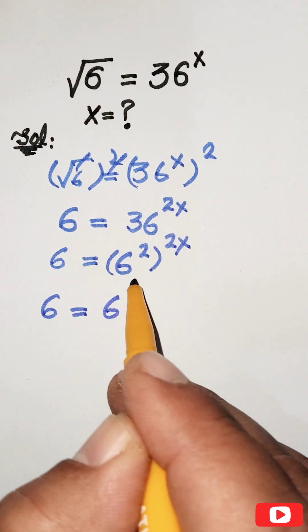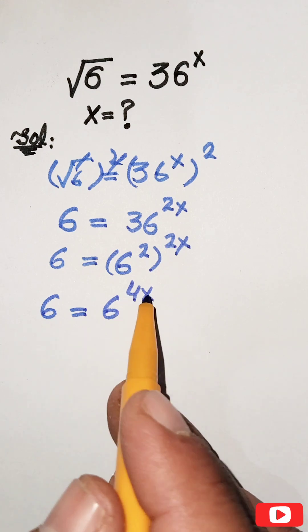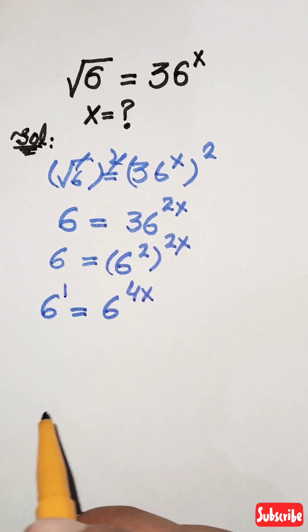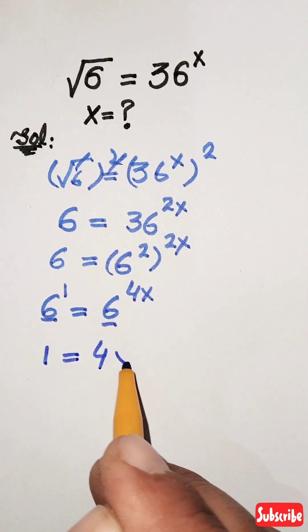Now we see that the bases are the same, so the powers will be equal. Here 6 to the power 1 equals 6 to the power 4x, hence bases are same so 1 equals 4x.